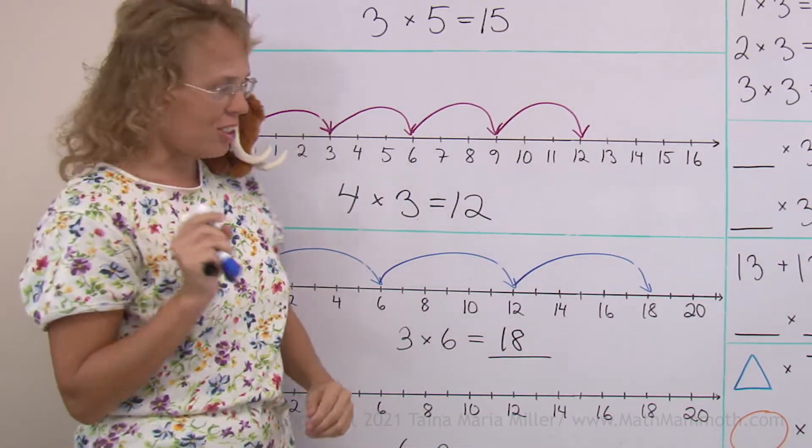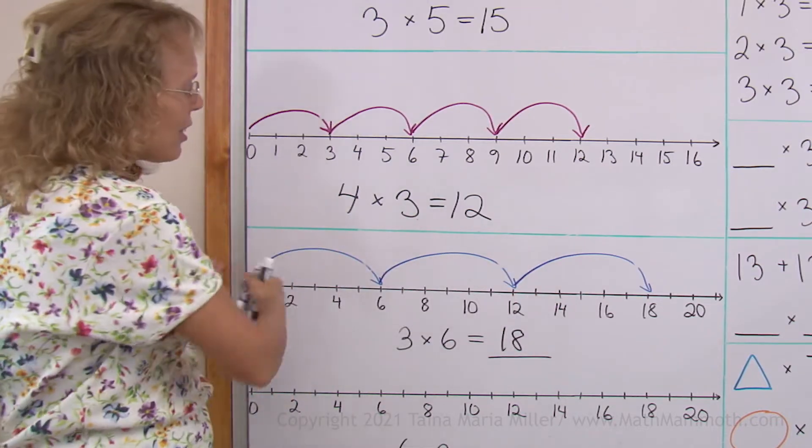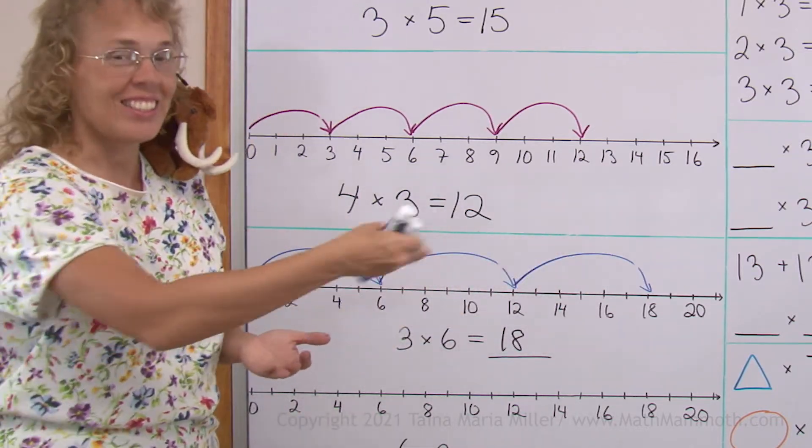Of course, you can also use addition. You can add six plus six plus six. That's basically what this number line jumping is all about. We're adding six and six and six.